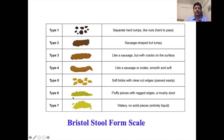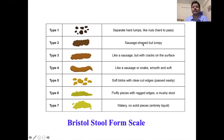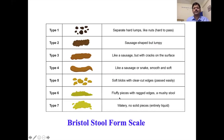For consistency of stool, the Bristol Stool Form Scale is very helpful. By definition, someone with chronic constipation has stool type 1 or 2 — hard lumpy stool or sausage-shaped stool. The Indian Society of Gastroenterology states that for Indian patients, even type 3 should be considered for constipation. If someone has type 5 or 6, they are unlikely to have chronic constipation. Importantly, this should be assessed when the patient is not taking laxatives.